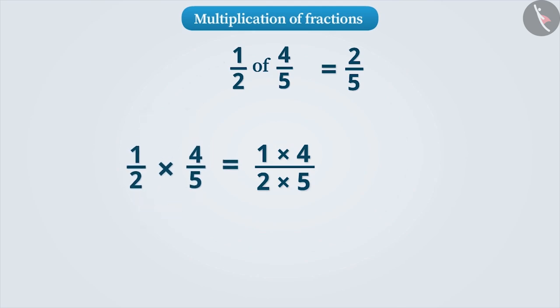For example, 4 fifth into half is equal to 4 into 1 divided by 5 into 2 which is equal to 4 by 10 which is also 2 by 5. Therefore,